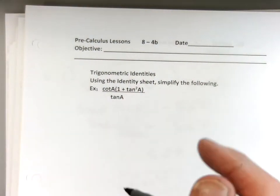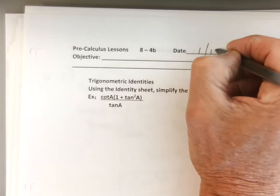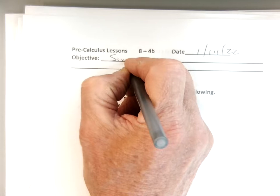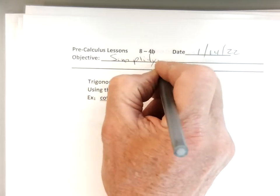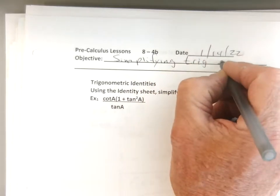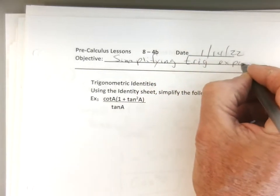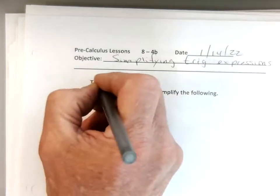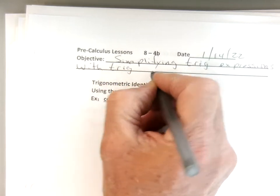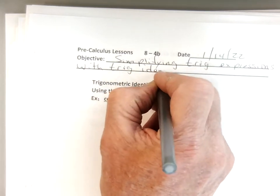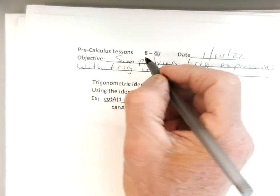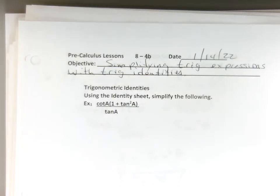Okay, so today, 114.22, we're going to be simplifying trig expressions with trig identities. It's going to be simplifying trig expressions with trig identities.